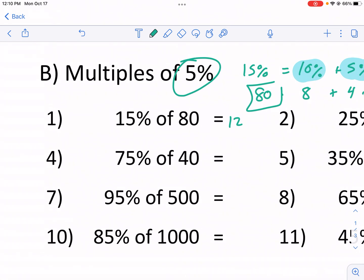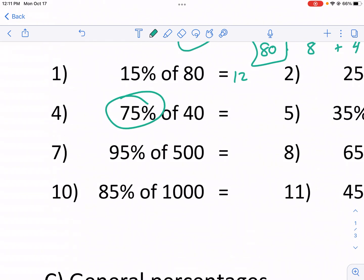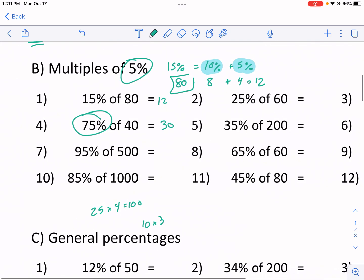75% of 40. This one's actually fairly simple. You can think about it in terms of 4. So 25% is a building block of 75%. And I know that you do 25 times 4 to get to 100. So I'm just looking for, what multiples of 4 do I have of 40? And that one's pretty simple. I know that 10 times 4 equals 40. And 75% means I have 3 of those. So I do 10 times 3, and that gives me 30. So 30 is 75% of 40.